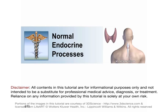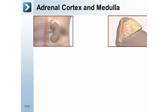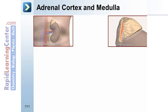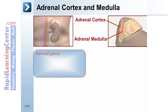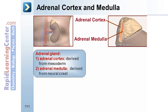We begin with a discussion of normal endocrine processes, starting with a review of the adrenal gland. The adrenal gland can be divided into the adrenal cortex, derived from mesoderm, and the adrenal medulla, derived from the neural crest.